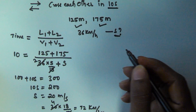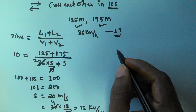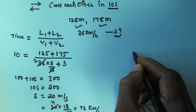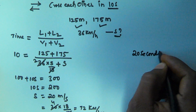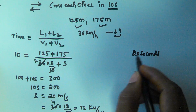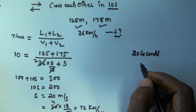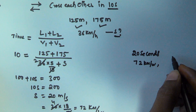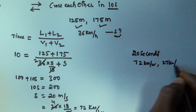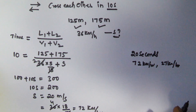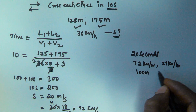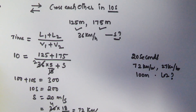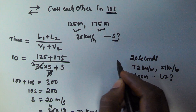Let's see another example. There are two trains moving in the same direction and they cross each other in 20 seconds. The speed of the first train is 72 kilometers per hour and the speed of the second train is 27 kilometers per hour. If the length of the first train is 100 meters, what is the length of the second train?